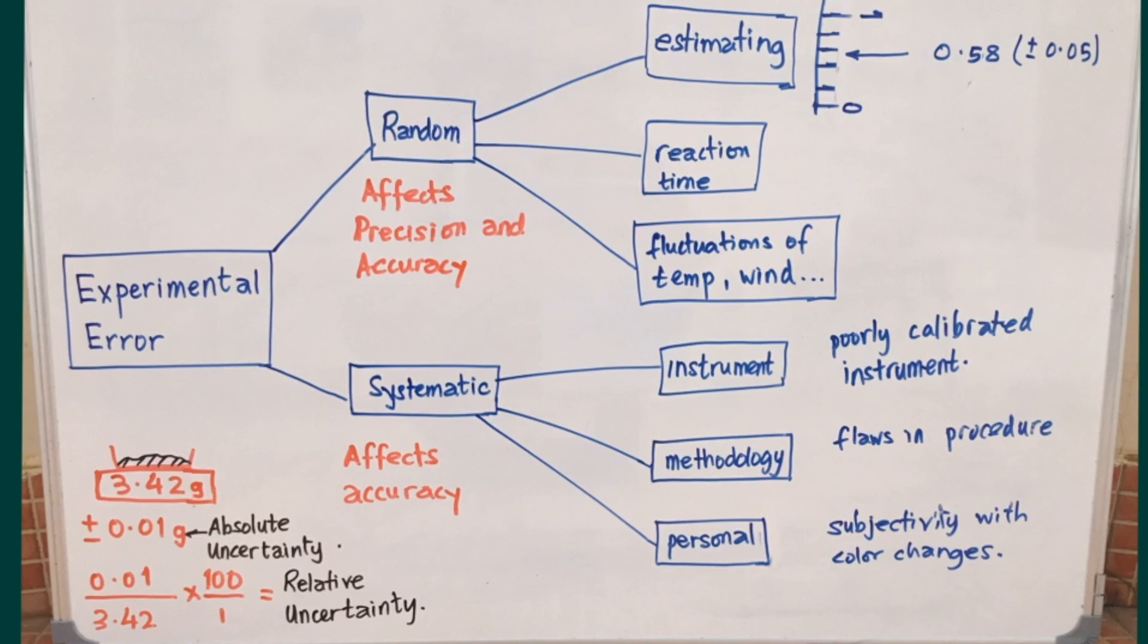Other examples of systematic errors could be flaws in your methodology. For instance, if you transfer a liquid or a powder and there's a consistent loss of reactant, then the final answer will always be skewed in a particular direction based on that loss. Personal judgments also, with respect to the subjectivity of color changes, tend to go only in one direction. And that would make these kinds of errors also systematic.